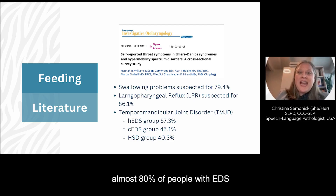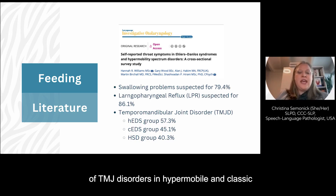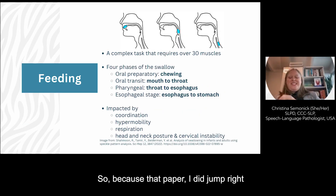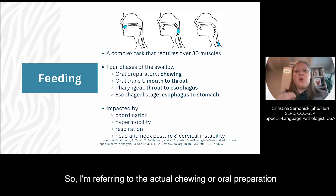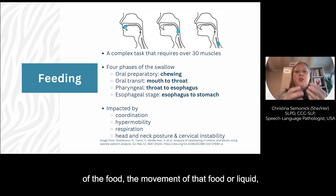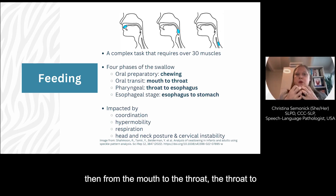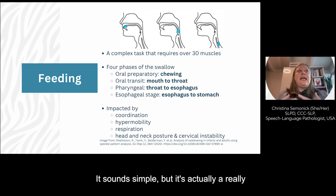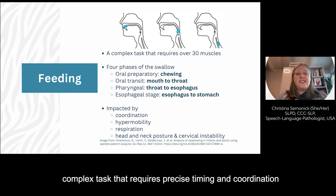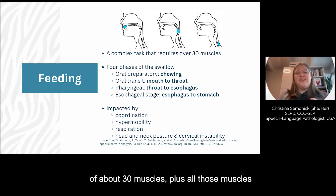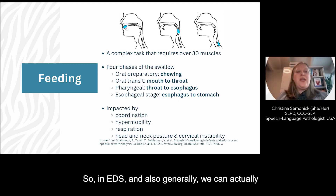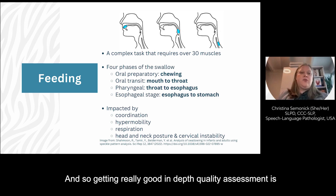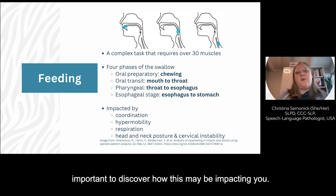For swallowing problems, almost 80% of people with EDS may have a swallowing disorder. We also see a very high likelihood of TMJ disorders in hypermobile and classic EDS and in hypermobile spectrum disorder. So what am I talking about when I'm talking about feeding? I'm referring to the actual chewing or oral preparation of the food, the movement of that food or liquid from the mouth to the throat, the throat to the esophagus, and the esophagus to the stomach. It sounds simple, but it's actually a really complex task that requires precise timing and coordination of about 30 muscles, plus all those muscles of respiration as well. In EDS and generally, we can actually see a breakdown at any one of these stages.